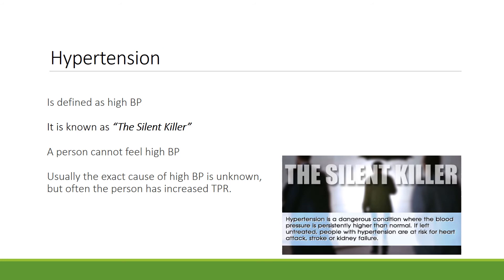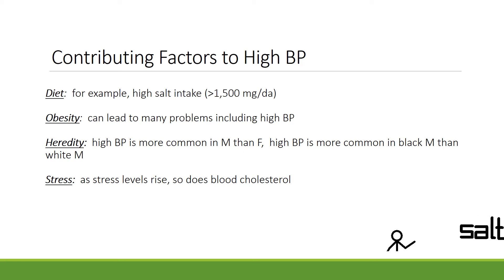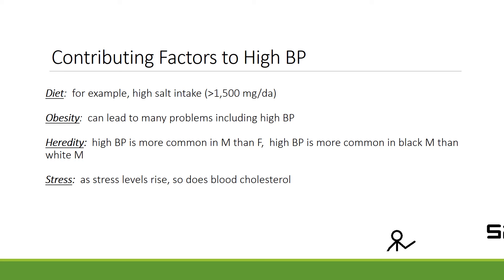Hypertension means high blood pressure; hyper means greater than or above. It's known as the silent killer because you cannot feel high blood pressure. In most cases the cause is unknown, but people with hypertension often have increased TPR (total peripheral resistance). Factors contributing to high blood pressure include diet — a high salt intake, more than 1500 mg a day, can raise blood pressure — obesity, heredity (it's more common in males than females, and more common in black males than white males), and stress, as stress levels rise so does blood cholesterol.